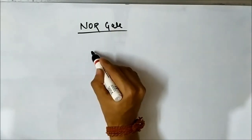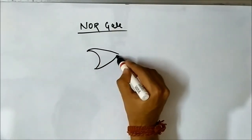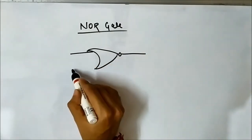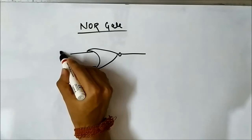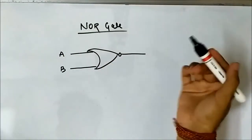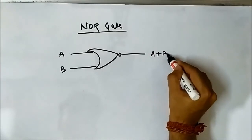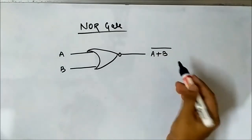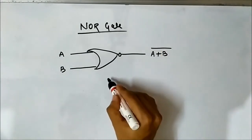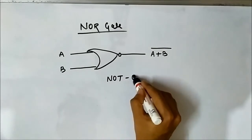A NOR gate looks something like this. A two-input NOR gate has an output of (A + B) complement — that is, A OR B, complemented. It is basically NOT of OR.